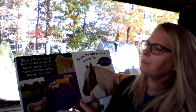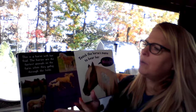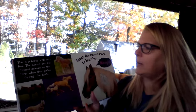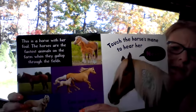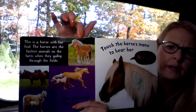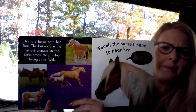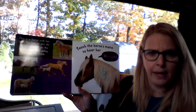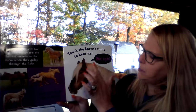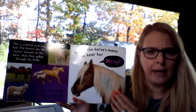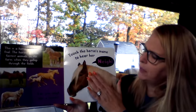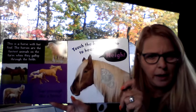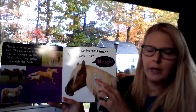This is a horse with her foal. The horses are the fastest animal on the farm when they gallop through the fields. Can you neigh like a horse? Did you know a baby horse is called a foal? There's a baby right there, running with its mother. Touch the horse's mane to hear her neigh. Horses have all this beautiful hair — it's called a mane. Did you know that's the sound a horse makes?